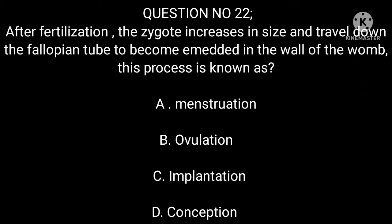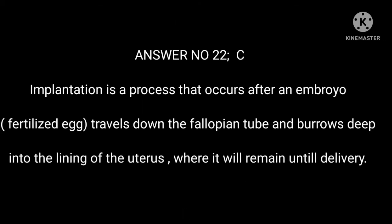Question number 22. After fertilization, the zygote increases in size and travels down the fallopian tube to become embedded in the wall of the womb. This process is known as: A. Menstruation. B. Ovulation. C. Implantation. D. Conception. Answer number 22: C. Implantation is a process that occurs after an embryo (fertilized egg) travels down the fallopian tube and burrows deep into the lining of the uterus where it will remain until delivery.